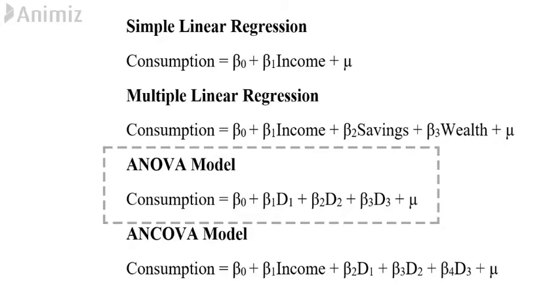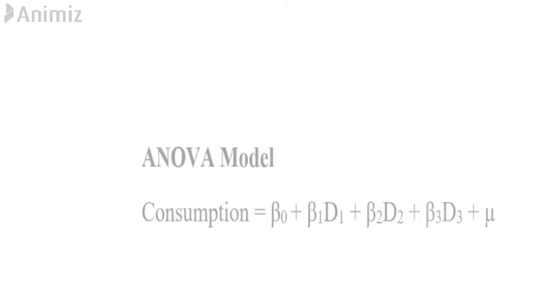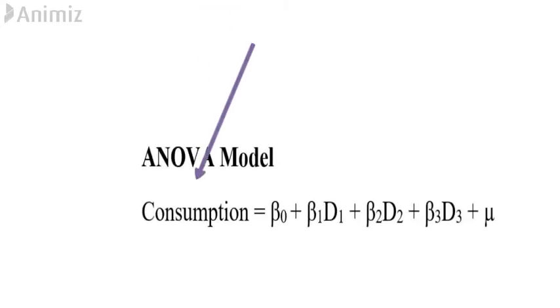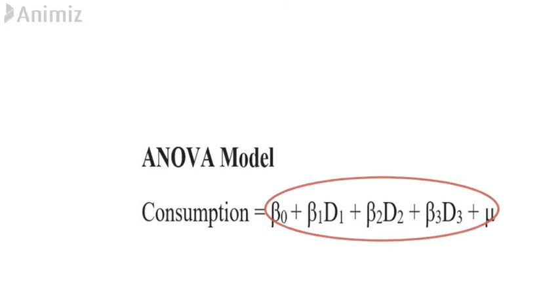ANOVA models are used to assess the statistical significance of the relationship between a quantitative dependent variable and qualitative or dummy independent variables, and they are often used to compare the differences in the mean values of two or more groups or categories.